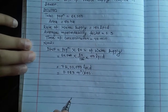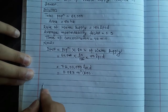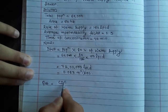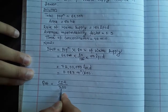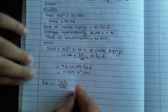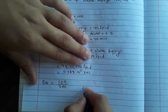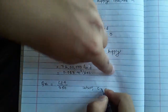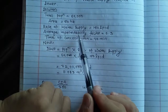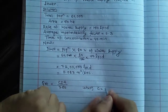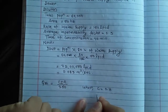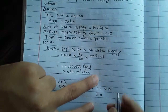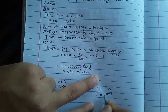Quantity of storm flow: Q_st equals C×i×A divided by 360. Where C is the average impermeability factor = 0.3, and i is the intensity of rainfall = 1020 divided by (t + 20), where t is the time of concentration.